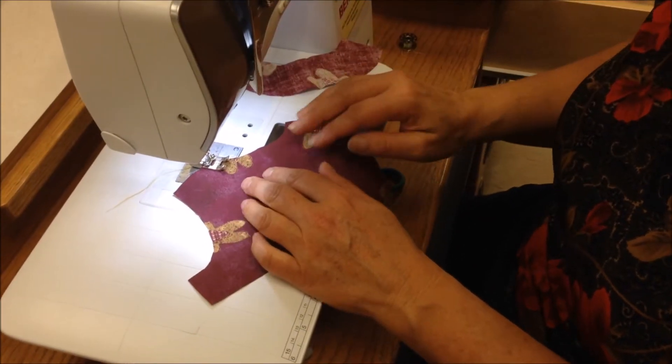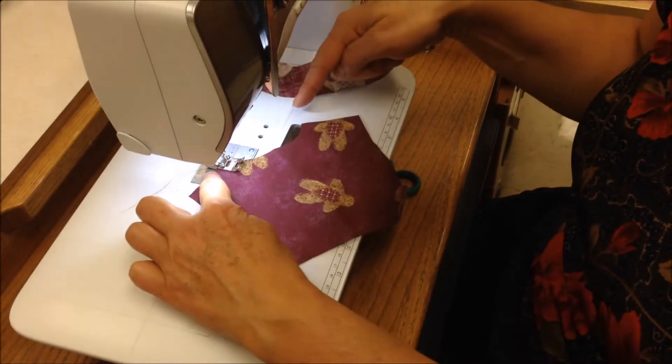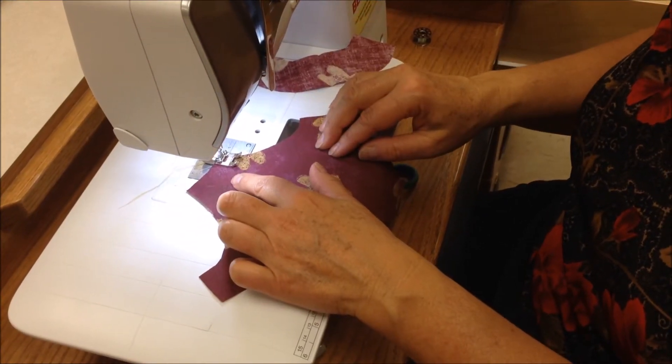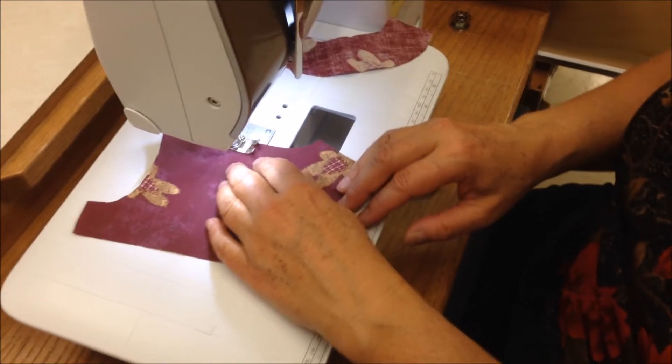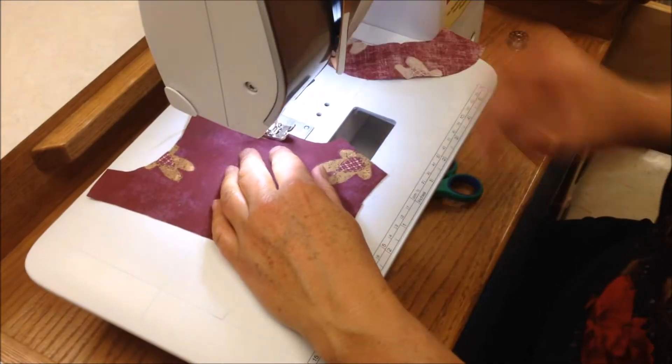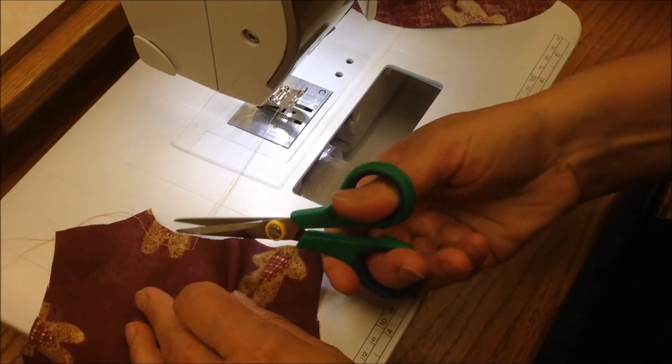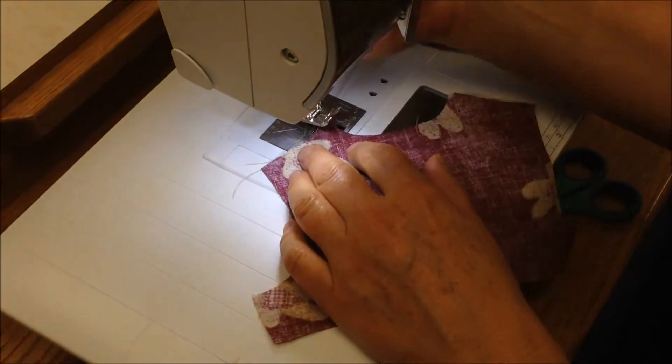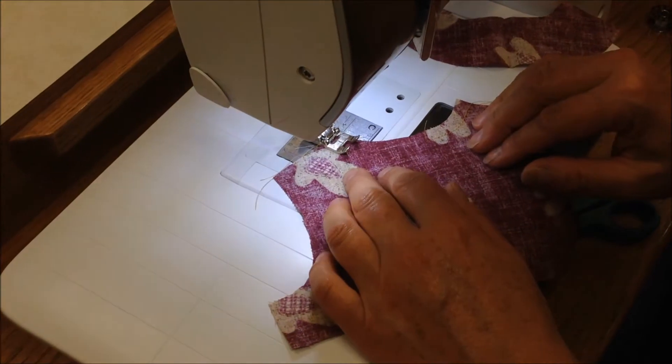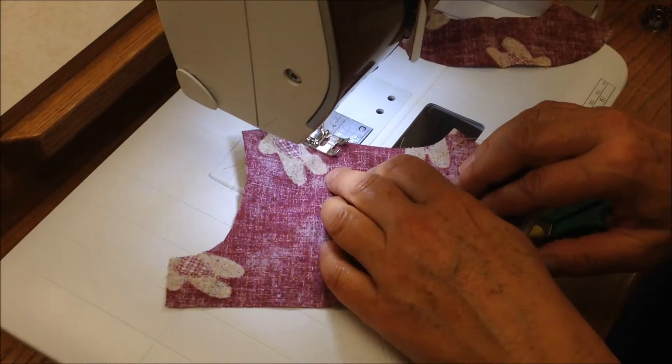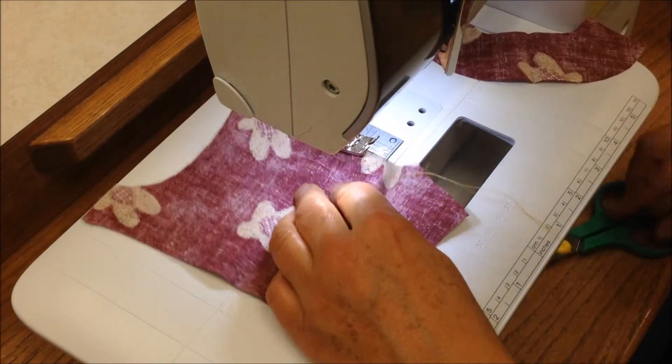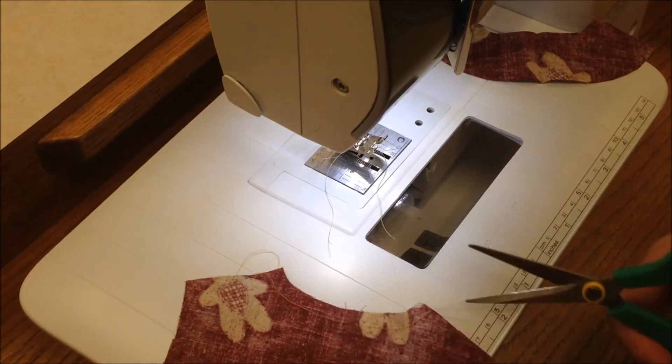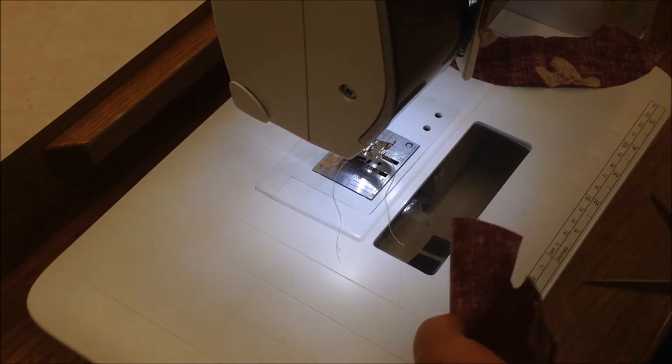And as you've already learned, stay stitching is done from shoulder to center, so we're going to be a quarter inch from the edge, and we would come just to the center, clip our threads, and go the opposite way to help prevent stretching in the bias area of this concave curve. A quarter inch. Now that's prepped for the seam.